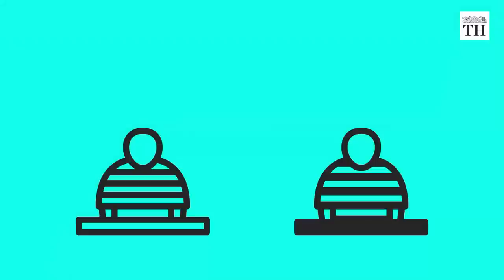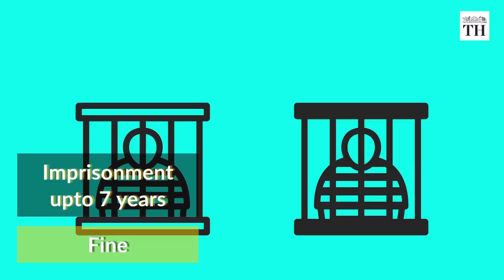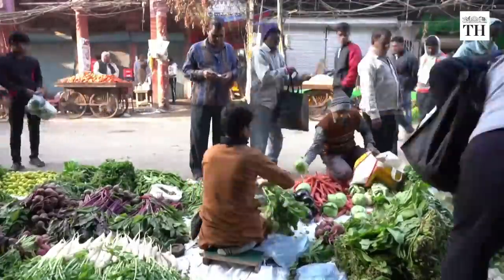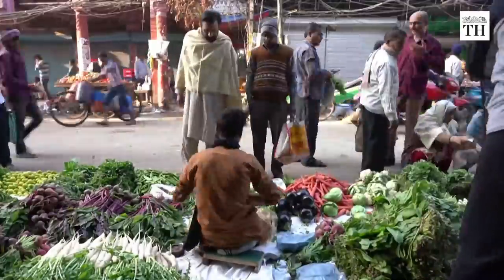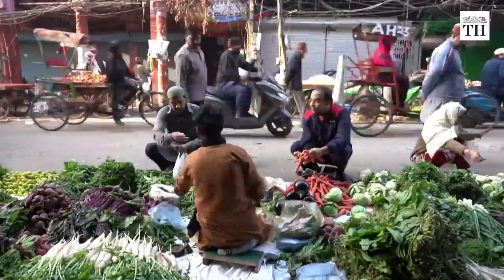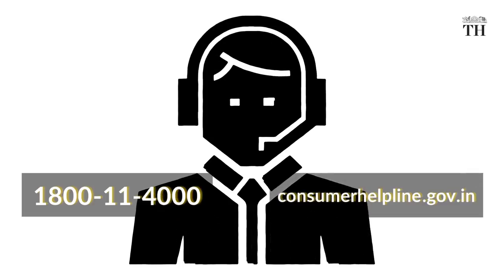An offender under the Essential Commodities Act can be punished with imprisonment up to seven years or a fine or both. Consumers can also register complaints with the National Consumer Helpline 1-800-11-4000 or at consumerhelpline.gov.in.